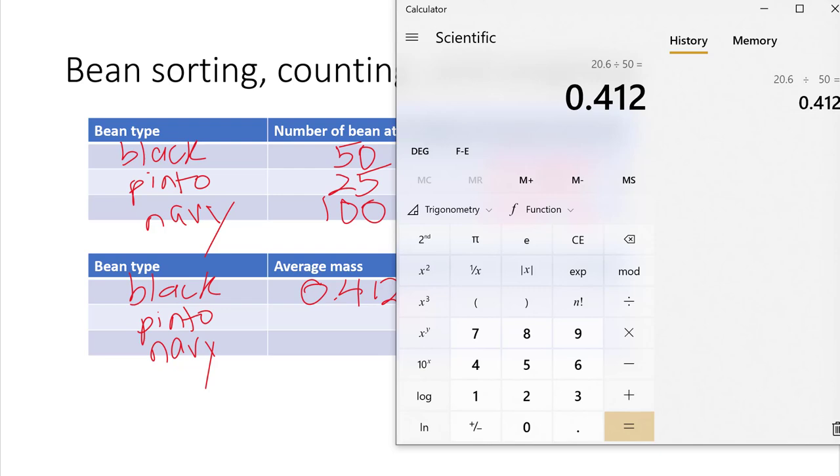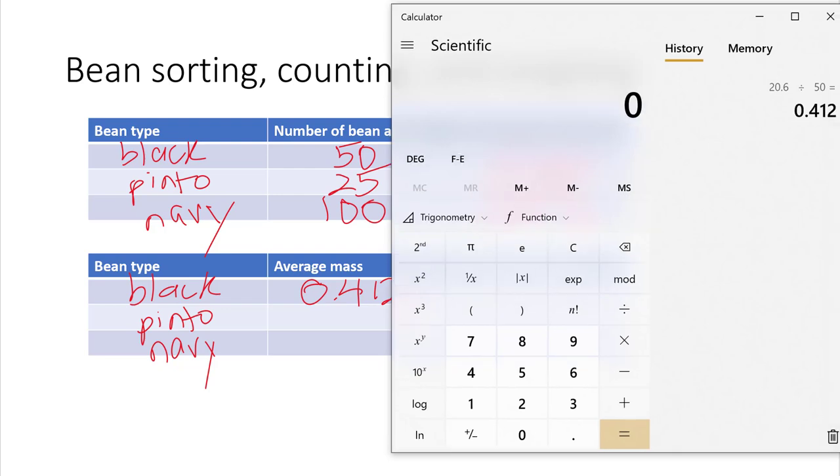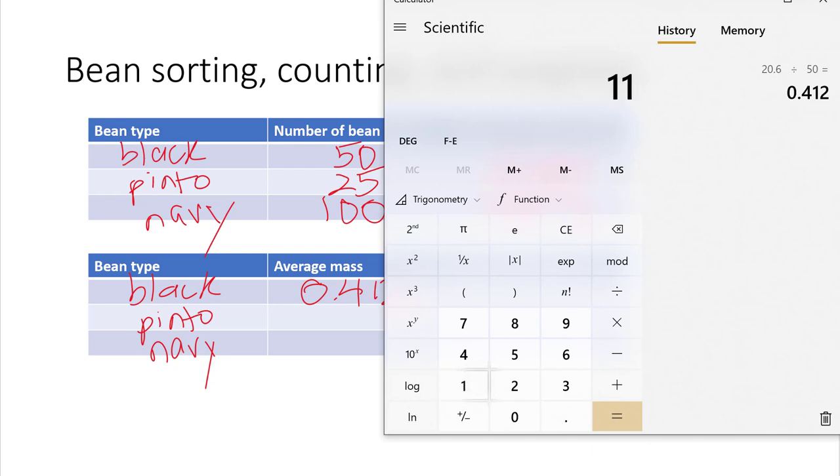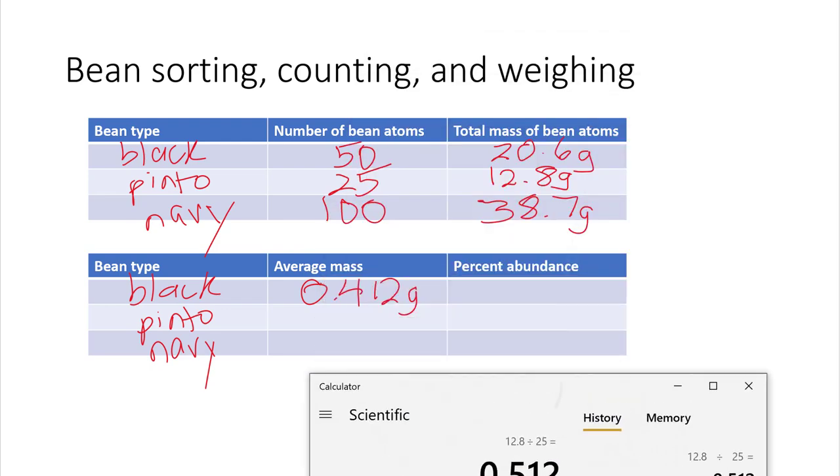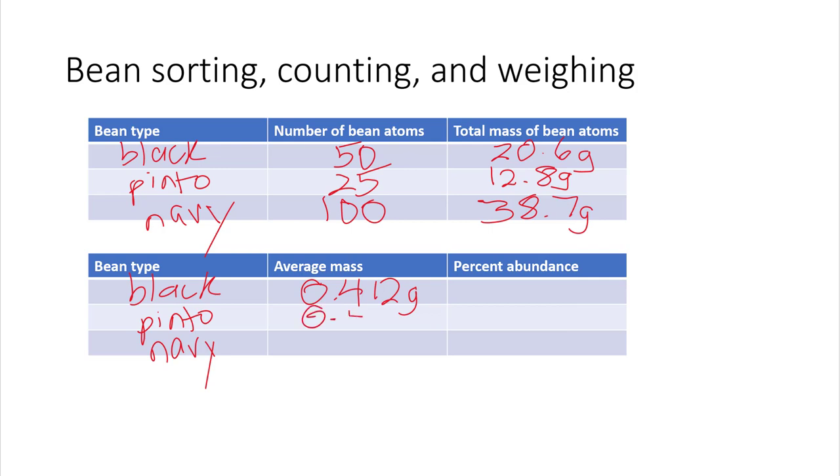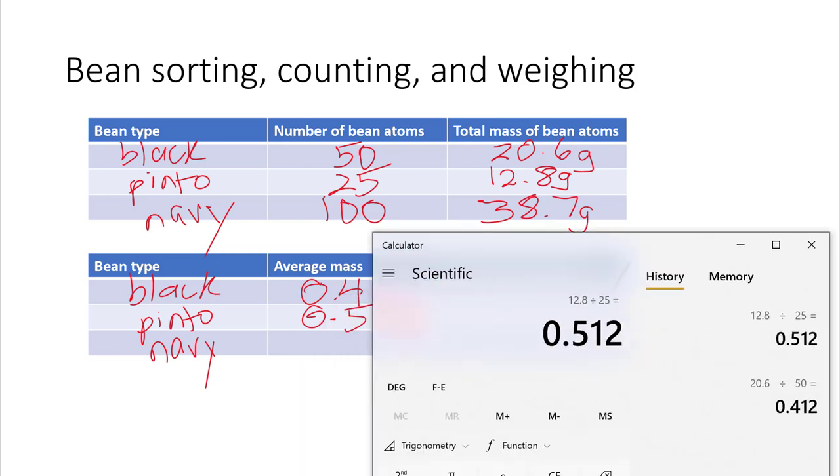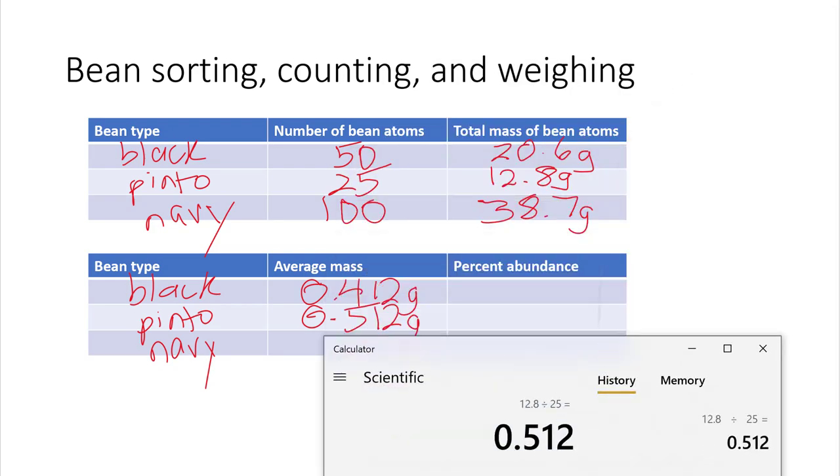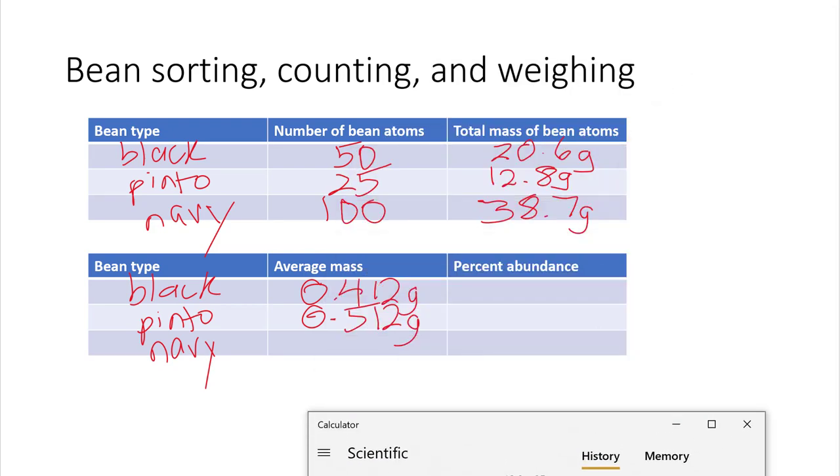Average mass of the black beans. And then I'm going to do 12.8 divided by 25, and I get 0.512. And then I'm going to do my navy 38.7 divided by 100. And I can do that in my head because just move the decimal point over two times. So it's 0.387 grams.